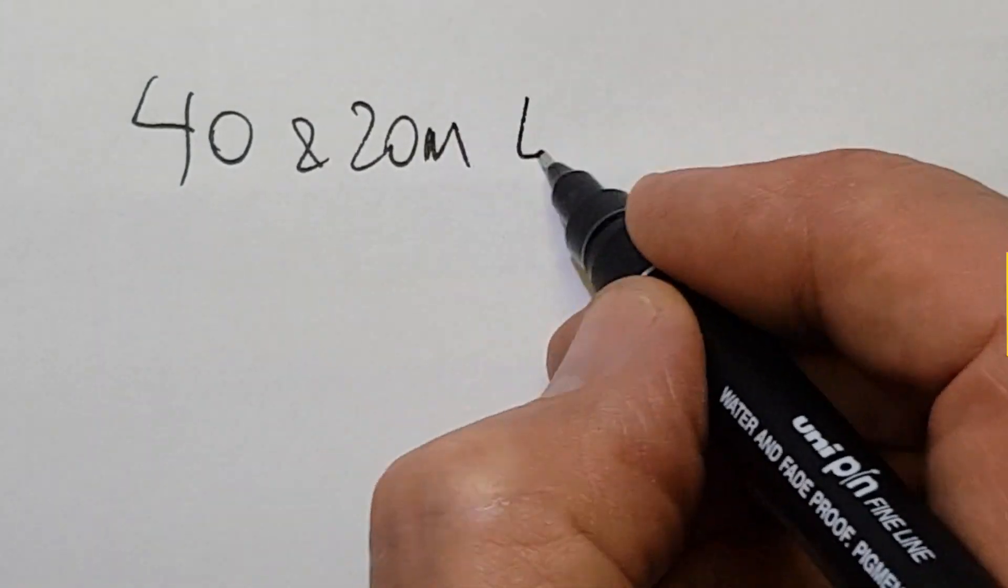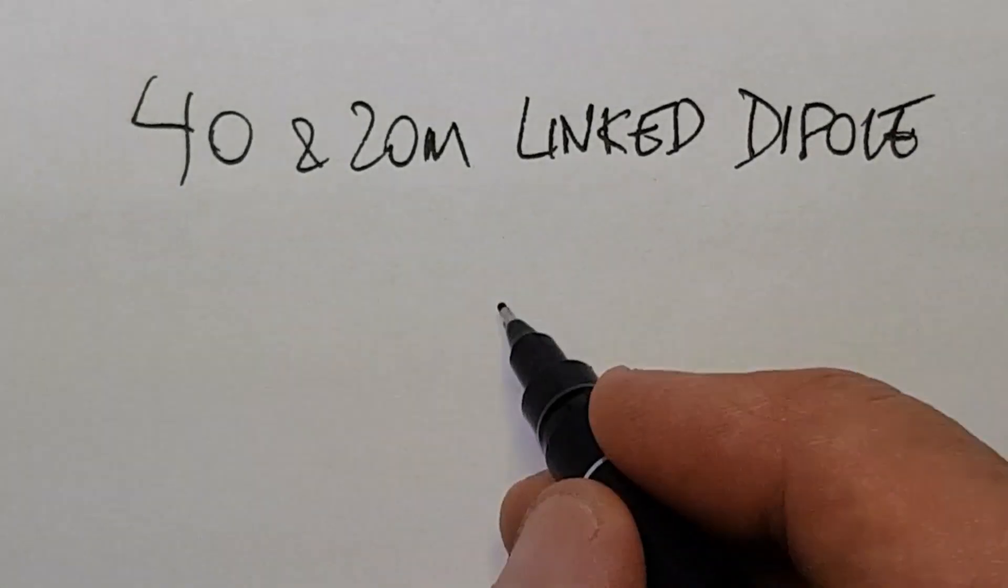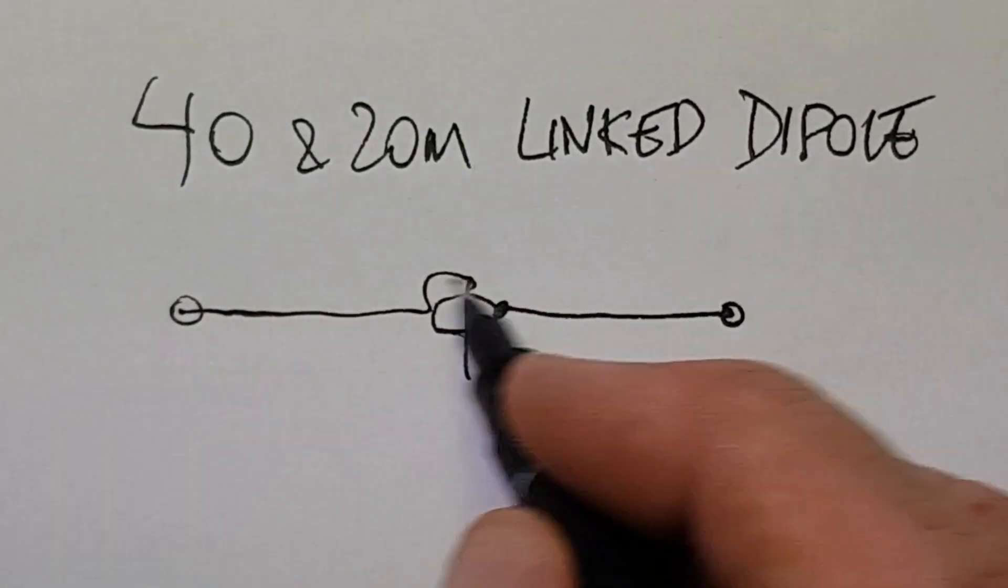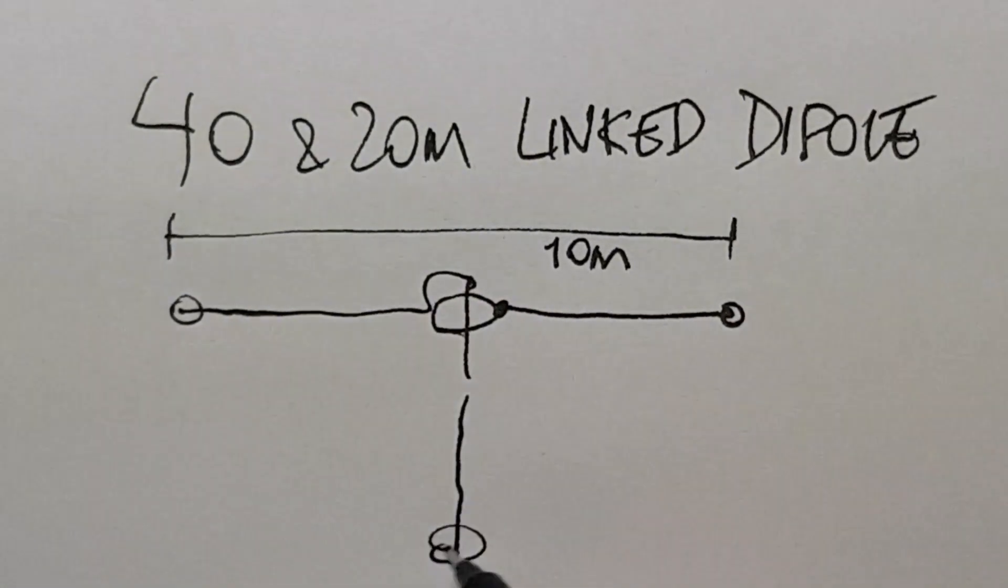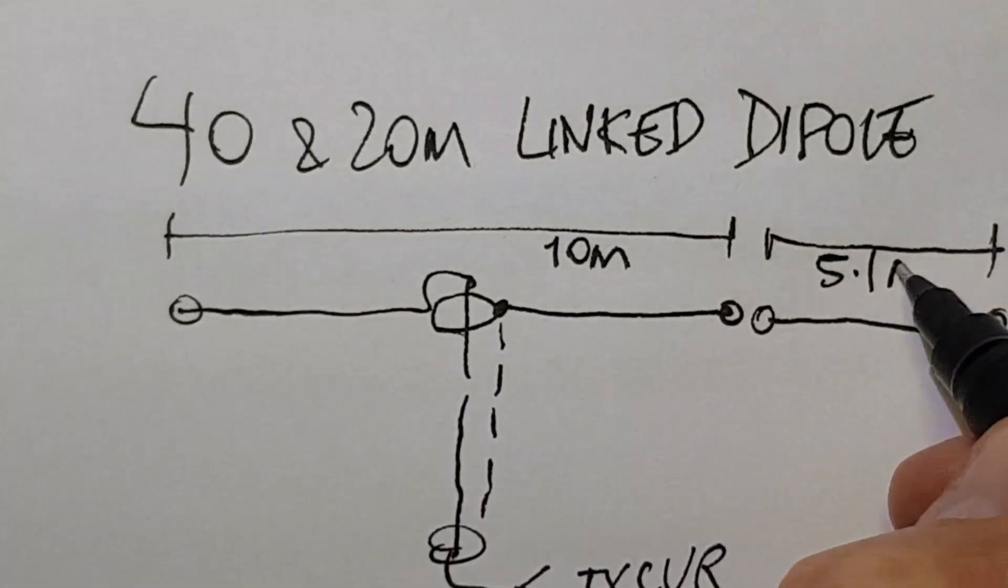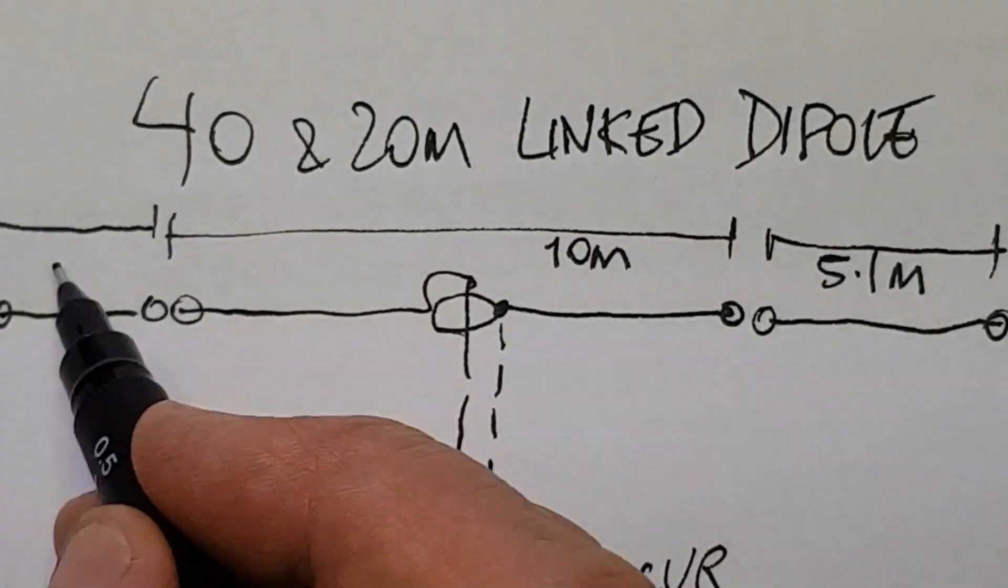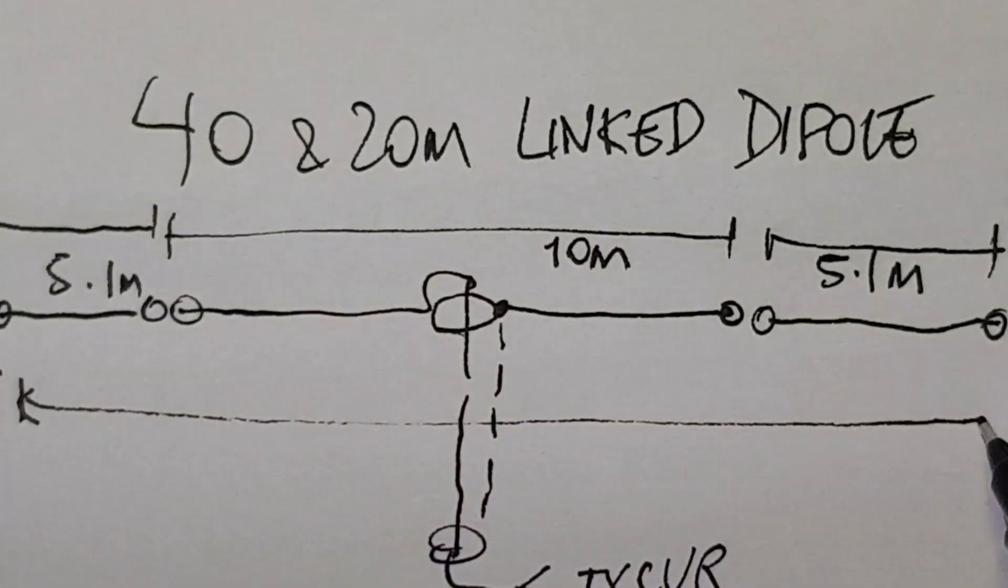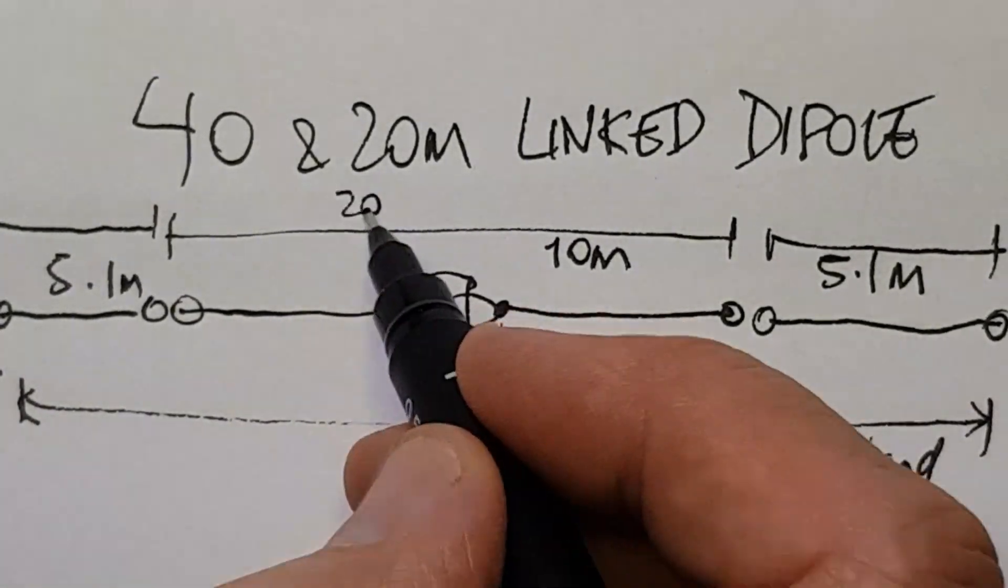I'm going to make up a 40 and 20 meter linked dipole for my friend Owen. This is a 20 meter dipole, about 5 meters of wire either side, with a link that can be opened or closed, and another 5.1 meters of wire either side.